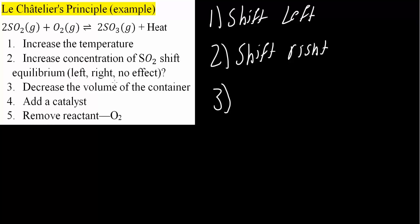Now for the third one, if we decrease the volume of the container. We have two moles of SO2, one mole of O2, and then two moles of SO3. So essentially, we have three moles of gas in the reactant, and we have two moles of gas in the product.